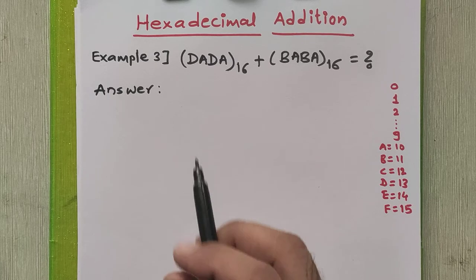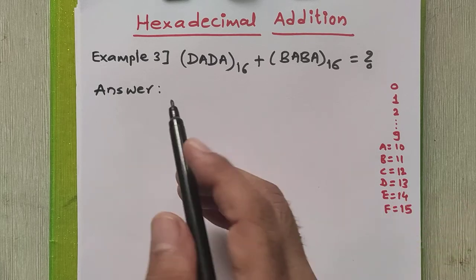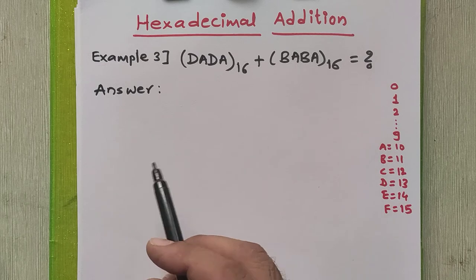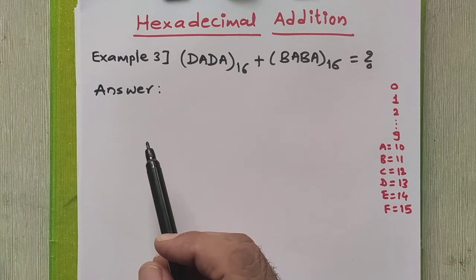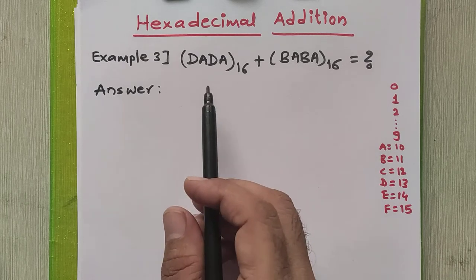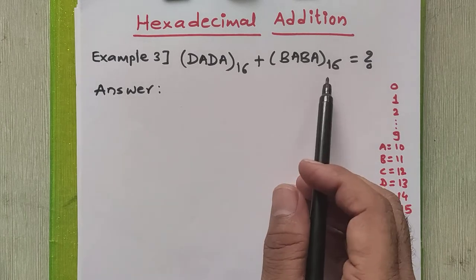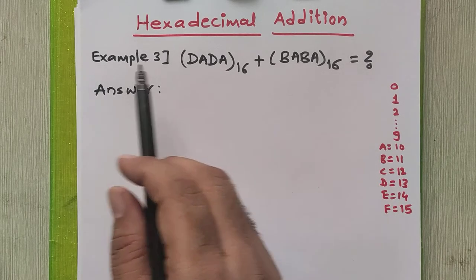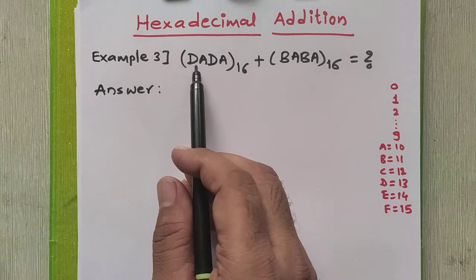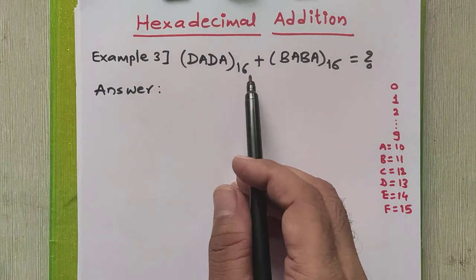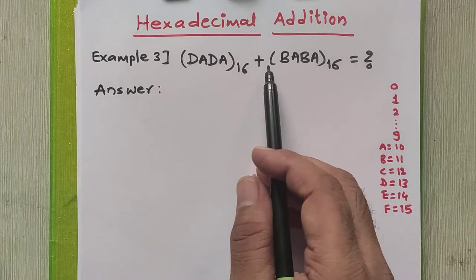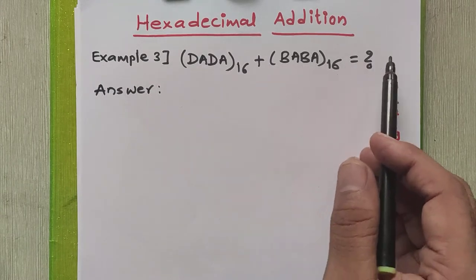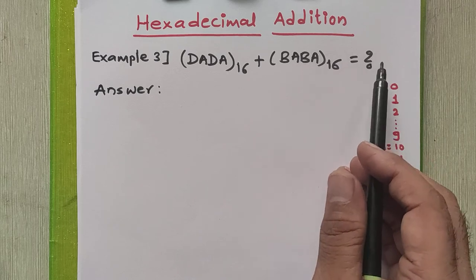To understand hexadecimal direct addition in a better way, we will see one more example of direct addition of two hexadecimal numbers. The numbers given to us are DADA in hexadecimal plus BABA in hexadecimal, and we have to find the answer.